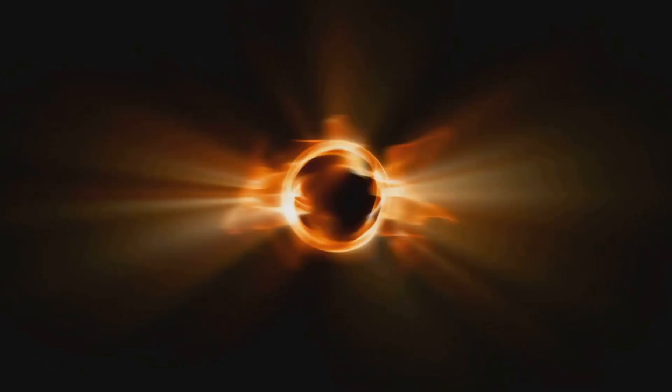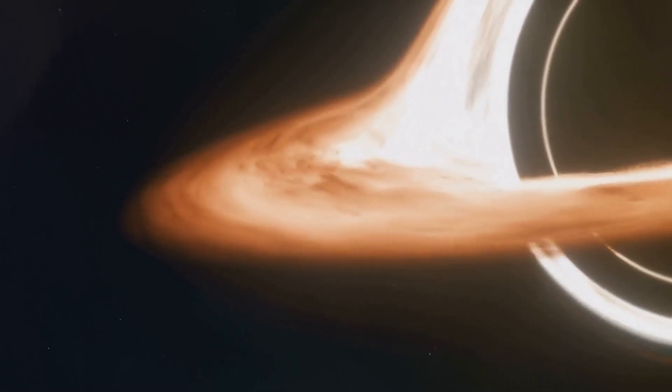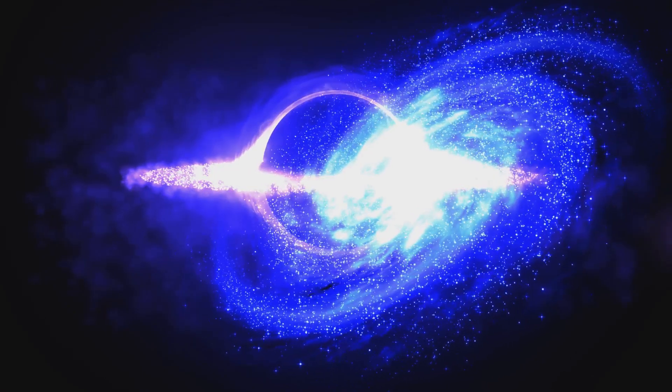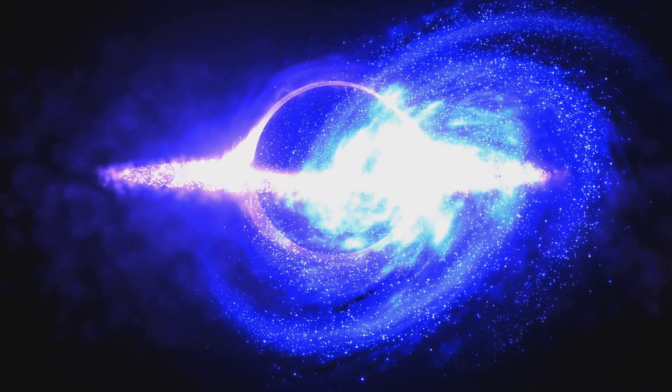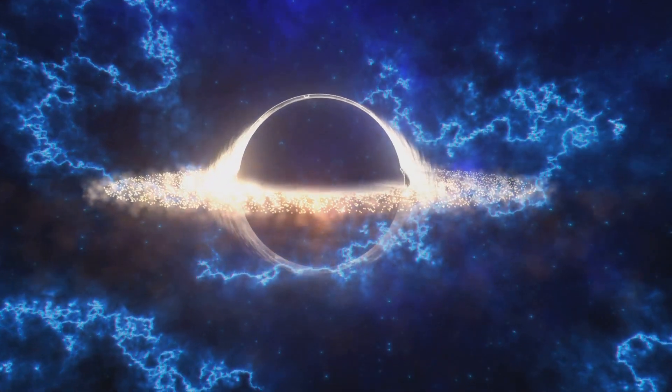The boundary of a black hole is known as the event horizon. It's the point of no return. Once something crosses the event horizon, it is trapped forever. Despite their name, black holes emit a faint radiation known as Hawking radiation. The study of Hawking radiation offers valuable insights into the nature of black holes.